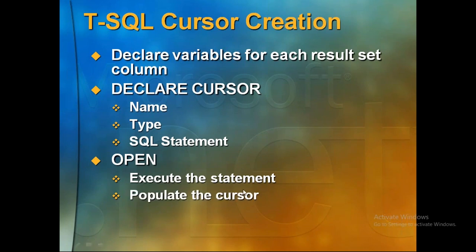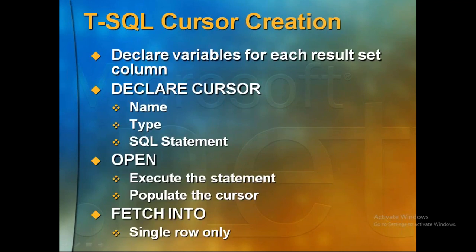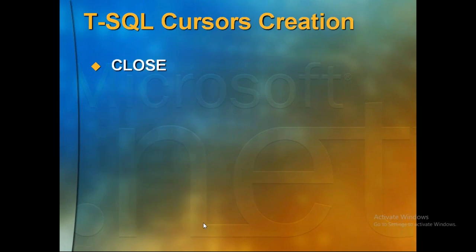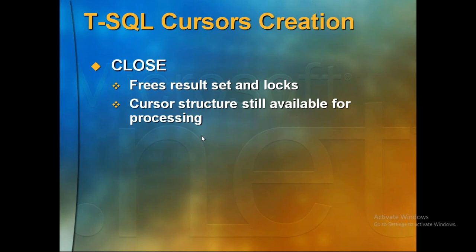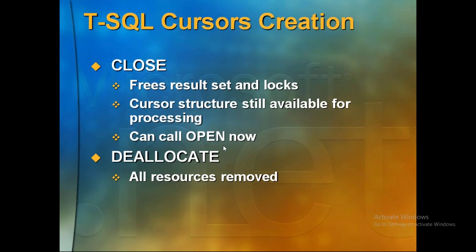You populate the cursor with an SQL query, then use FETCH INTO to get one row at a time — fetching multiple rows is not permitted. You can close the cursor, which freezes the result set and locks, but the cursor structure is still available in tempdb so you can reopen it. DEALLOCATE removes all resources entirely.